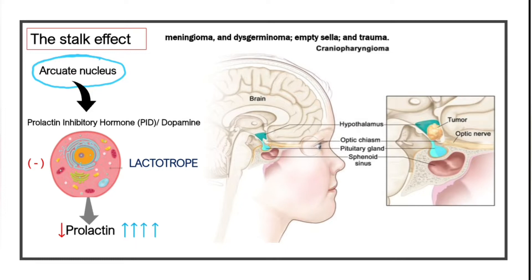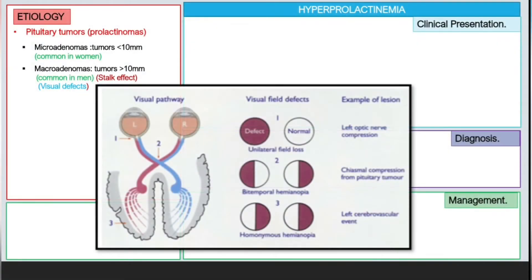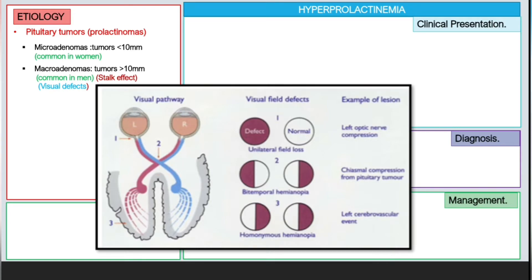Visual defects occur because the tumor is very close to the optic chiasm. Let me show you the visual pathway — the type of visual impairment caused is called bitemporal hemianopsia. Now let's look at other causes of hyperprolactinemia.